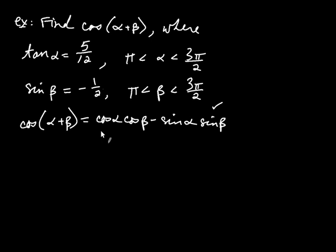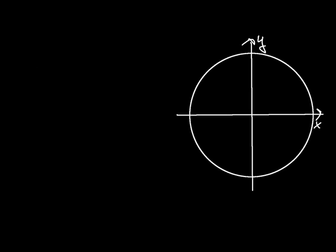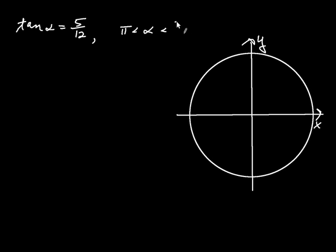Let's think about alpha. We know tangent of alpha is 5/12, and the other condition is that alpha lies between pi and 3pi/2, which means alpha has to lie in quadrant 3. So our angle alpha might look something like that — in the third quadrant, even though we don't know its exact value.